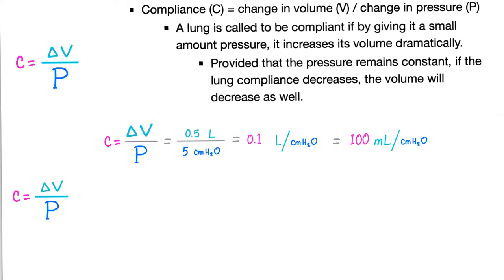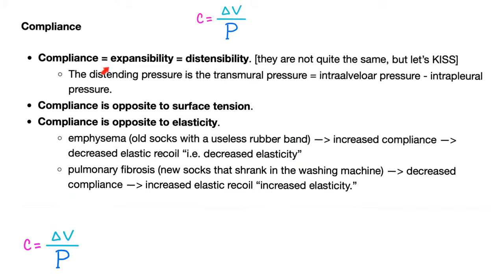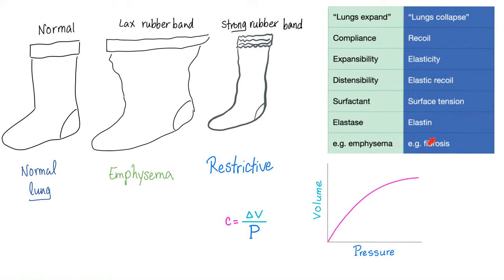Normal tidal volume is 500 mL (0.5 L) over a change in pressure of about 5, giving compliance of 0.1 L/cmH₂O, or 100 mL/cmH₂O. Compliance is the same as expansibility or distensibility. If the lung is super compliant, it's very easy to expand. Compliance is opposite to surface tension (which wants the lung to collapse) and opposite to elasticity (elastic recoil also wants the lung to collapse).